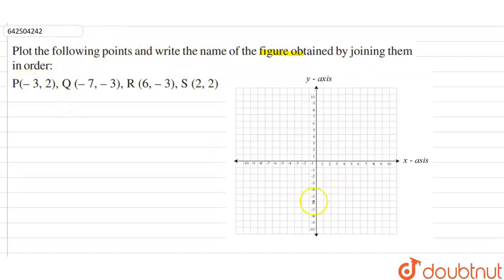Firstly, point P is minus 3 comma 2. So, x coordinate minus 3, minus 3 comma 2. 2 is positive. So, this is point P which is minus 3 comma 2.